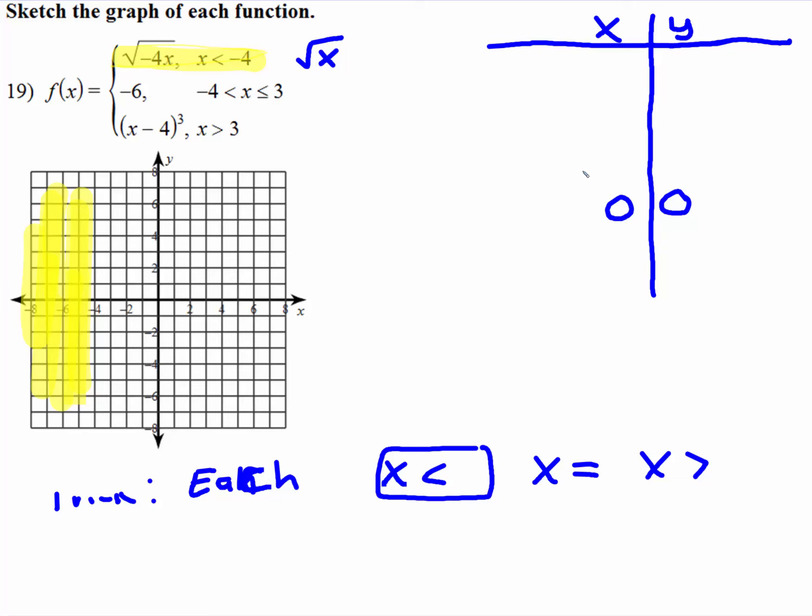So let's go ahead and put negative 4 in there. Well, negative 4 times negative 4 is positive 16. What's the square root of positive 16? It's 4. If you need to see that, we could do that. So now, let's think about what else we could do.